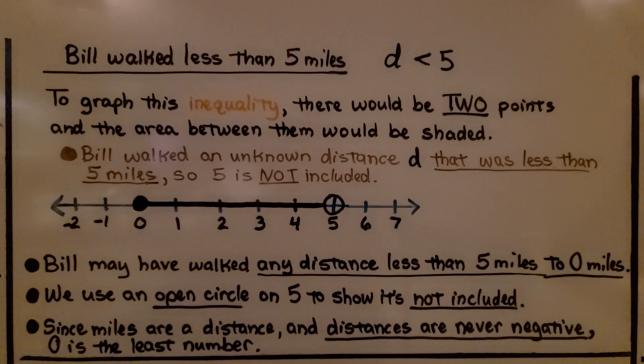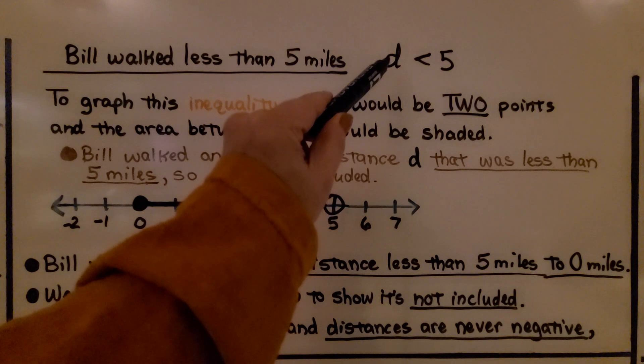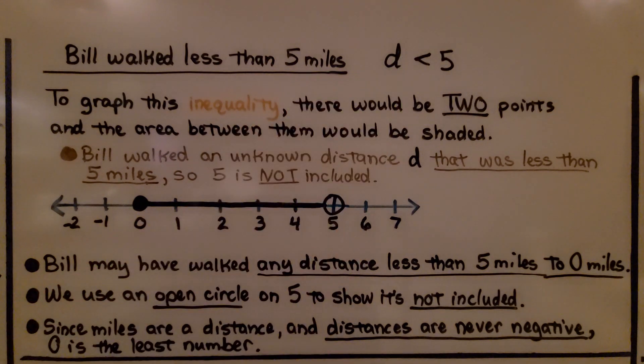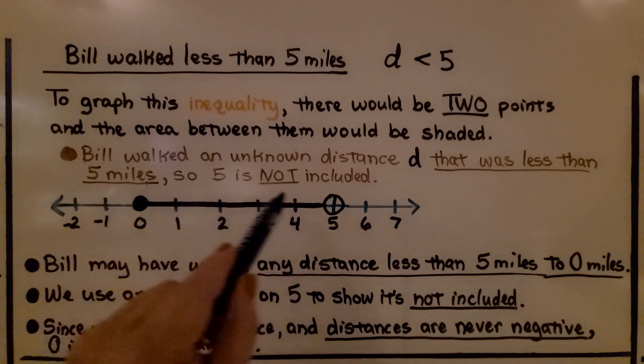Bill walked less than five miles. The distance he walked is less than five. To graph this inequality, there would be two points, and the area between them would be shaded.